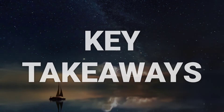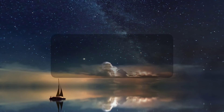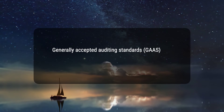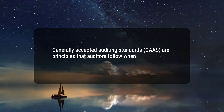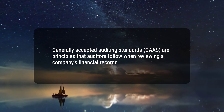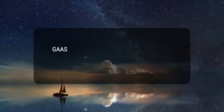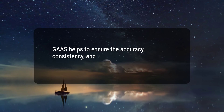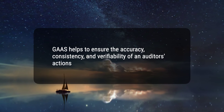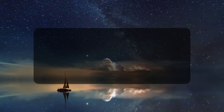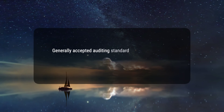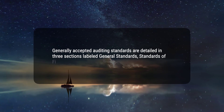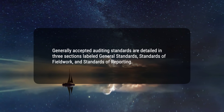Here are five key takeaways. 1. Generally Accepted Auditing Standards, GAAS, are principles that auditors follow when reviewing a company's financial records. 2. GAAS helps to ensure the accuracy, consistency, and verifiability of an auditor's actions and reports. 3. Generally Accepted Auditing Standards are detailed in three sections labeled General Standards, Standards of Fieldwork, and Standards of Reporting.